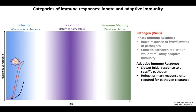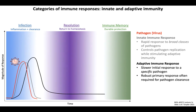In contrast to innate immunity, adaptive immunity is kinetically characterized by a slower initial response to an individual's first infection with a given pathogen, represented by the black line here. However, although there is this kinetic delay, once adaptive immunity is engaged, this provides a powerful primary response that is highly specific to that individual pathogen. This adaptive immune response is usually required for successful pathogen clearance.